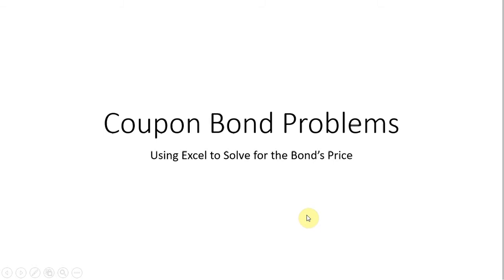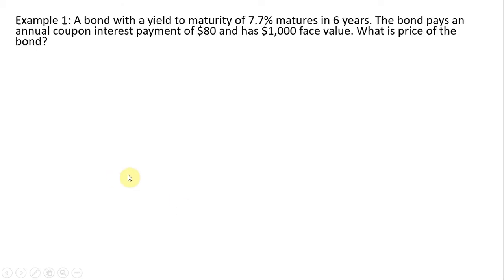In this video we're going to look at coupon bonds and solve for the coupon bond's price using an Excel command. In example one we have a bond with a yield to maturity of 7.7 percent. This bond matures in six years. The bond pays an annual coupon interest payment of $80 and has a $1,000 face value. What is the price of the bond?